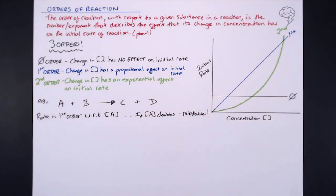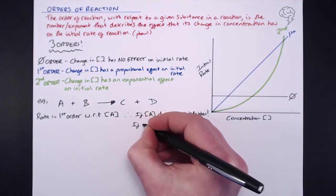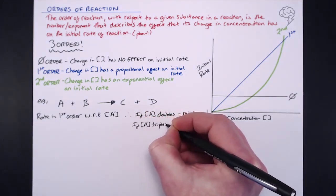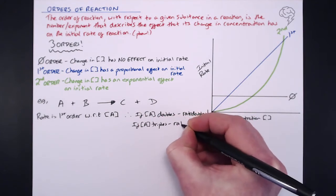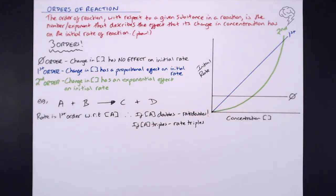So if the concentration of A doubles, the rate doubles. Also, if you increase the concentration of A by three times — if the concentration of A triples — then your rate is also going to triple. And don't forget, if the concentration of A is halved, then your rate is also going to halve — it's directly proportional whichever way you look at it for first order.